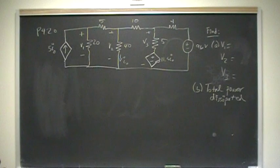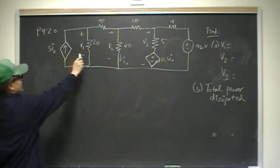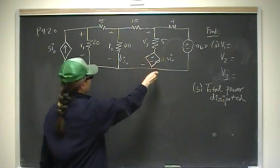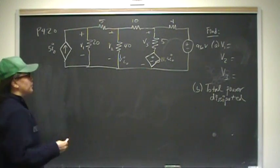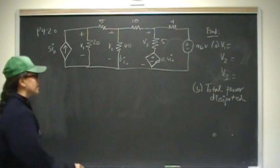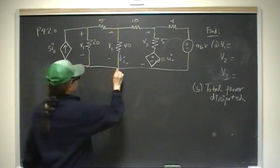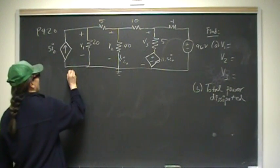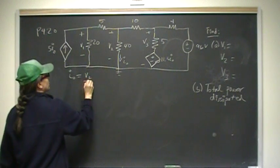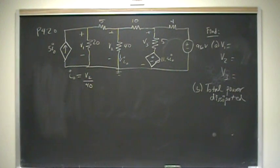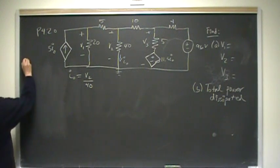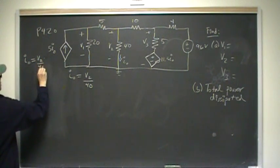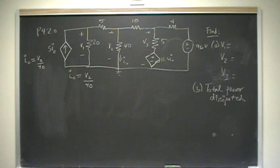Let's begin. Whenever you have something that is dependent on something else — in this case a current source dependent on I₀ and a voltage source also dependent on I₀ — the first thing you want to do is define that relationship. We're going to define I₀. I₀ is V2 over 40. So whenever I see I₀, I'm going to redefine it like that.